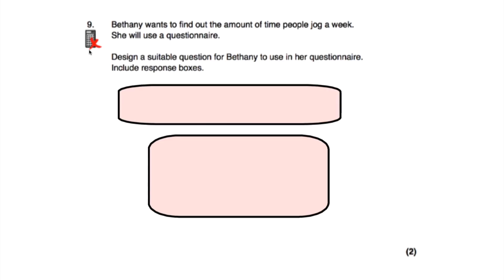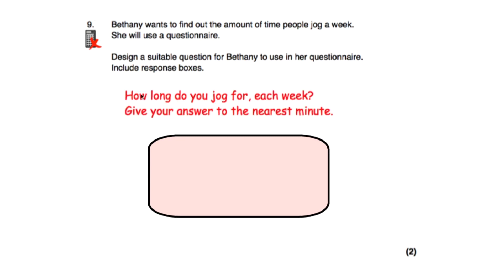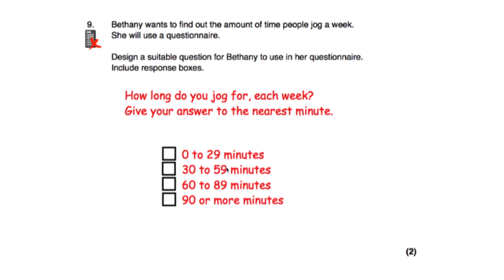Question nine says Bethany wants to find out the amount of time people jog a week and we need to design a suitable question with response boxes. I've written: 'How long do you jog for each week? Give your answer to the nearest minute.' The options are: 0 to 29 minutes, 30 to 59 minutes, 60 to 89 minutes, and 90 minutes or more. By asking for the nearest minute, I don't have to worry about seconds, and the boxes cover all possibilities without overlapping.